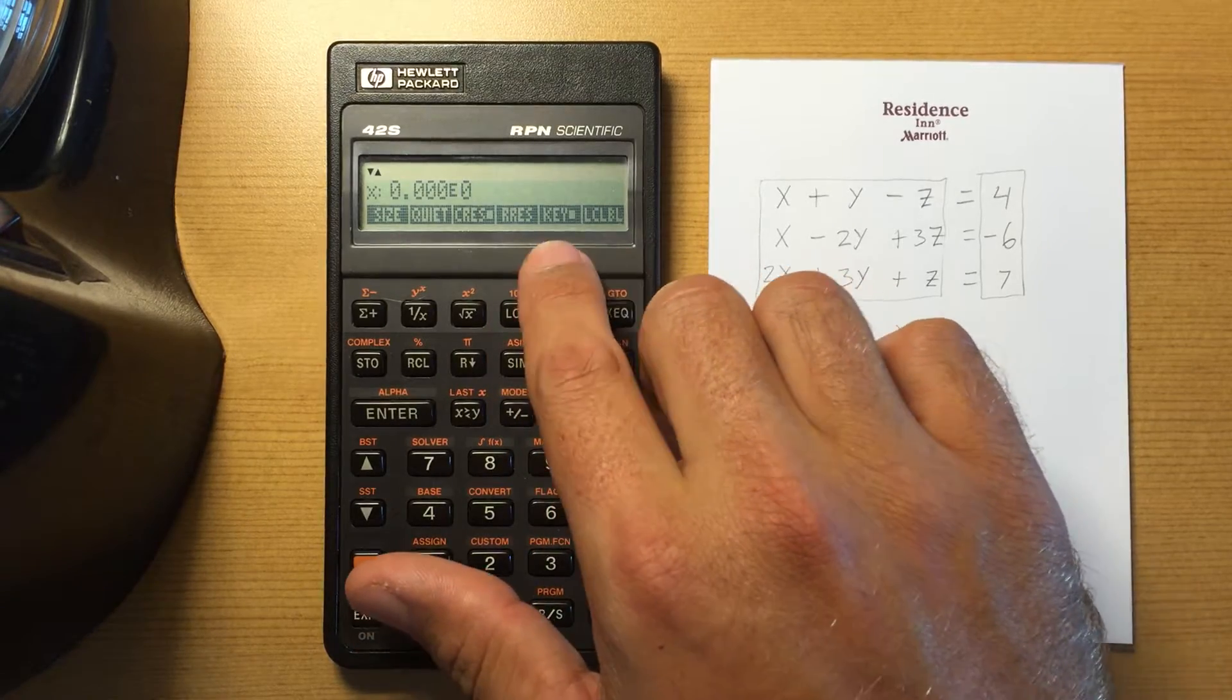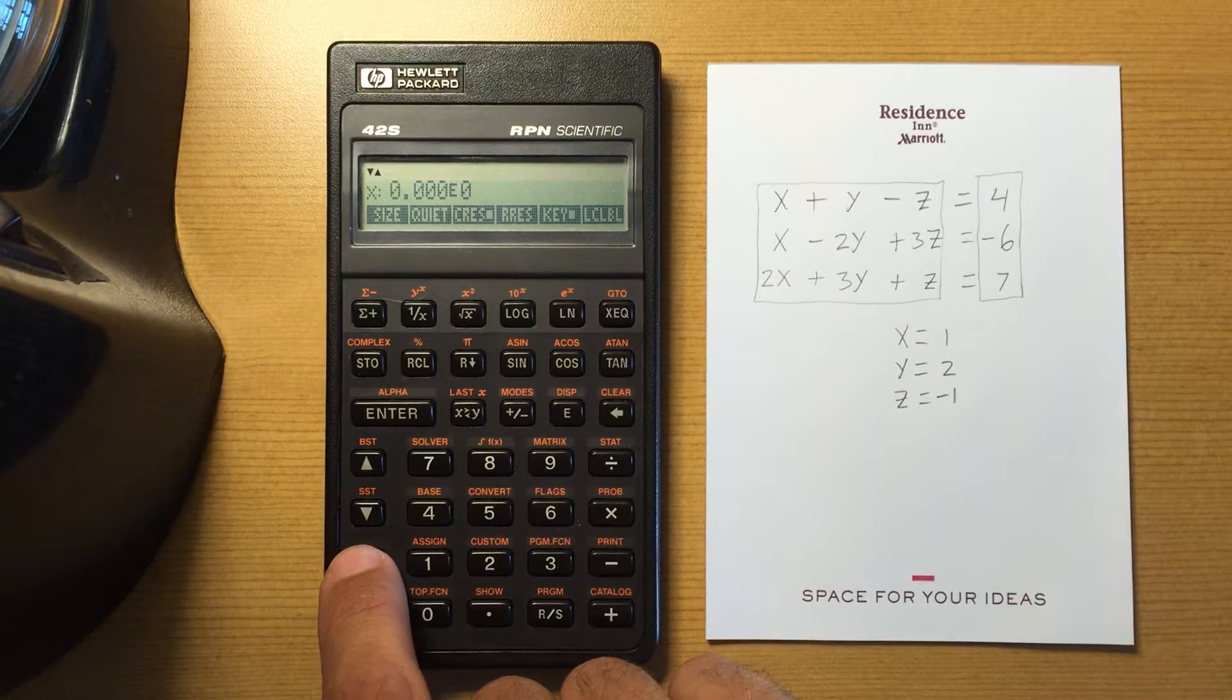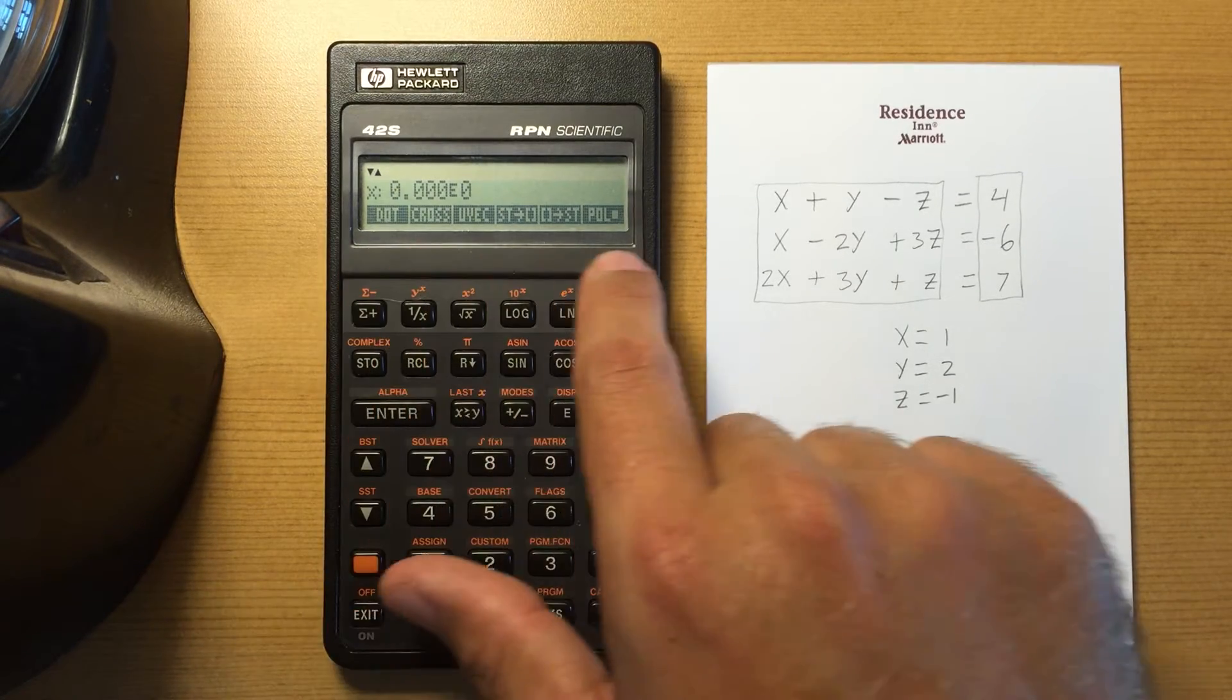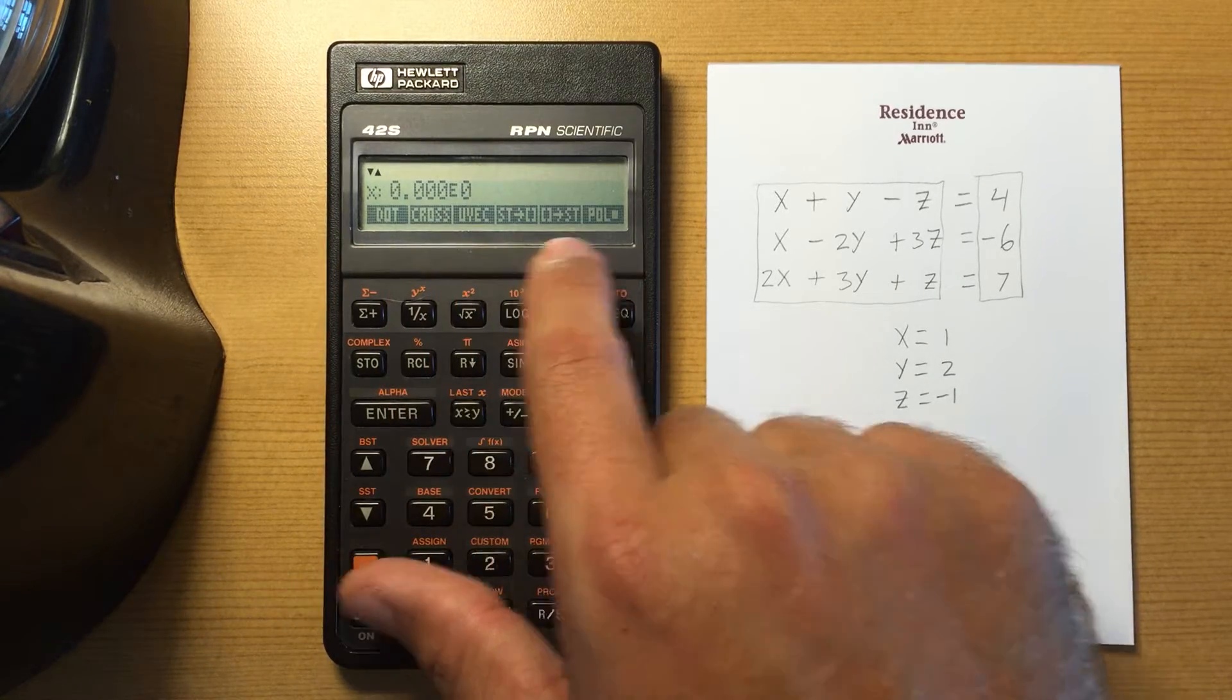And these last two are for your custom menu. So right now I have it set to keys, which means I can assign custom keys to my custom menu. So I have my dot product, cross product, unit vector, etc.